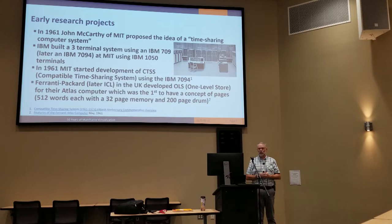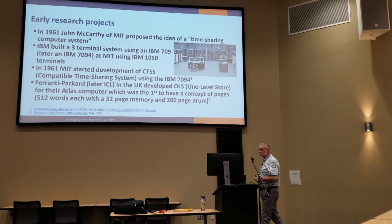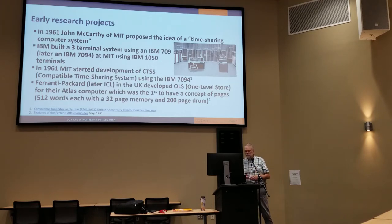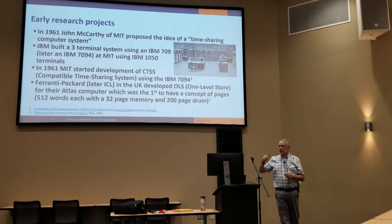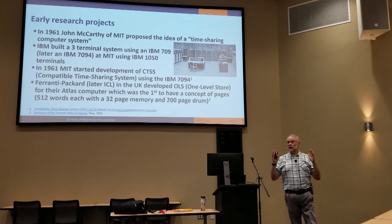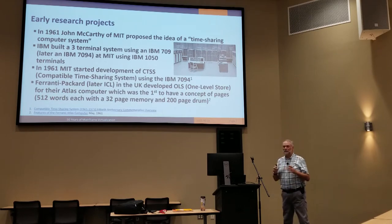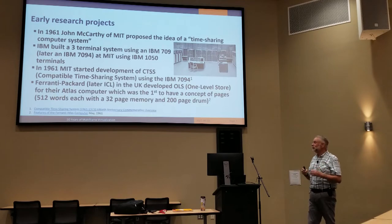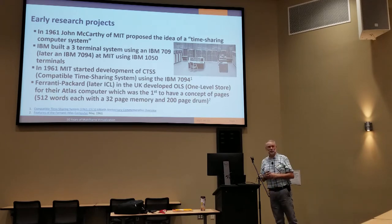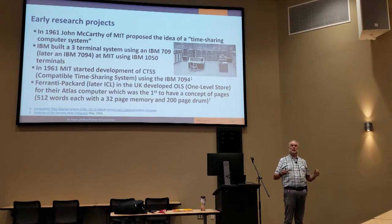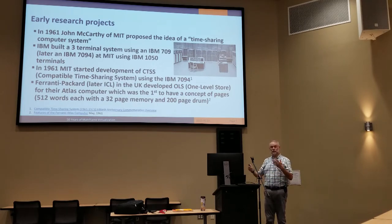Later in 1961, MIT decided to build CTSS — the Compatible Time Sharing System — running on that 7094. At the same time, Ferranti Packard, which later became ICL in the UK, developed a system called One Level Store for Atlas. Atlas was really neat — it was the first machine that had the concept of pages. The pages were 512 words, with a 32-page memory and a 200-page drum, so about 50K storage — not big by today's standards, but it was the first to do paging.